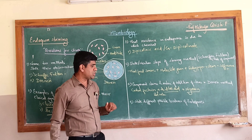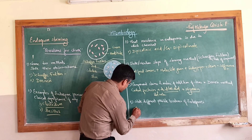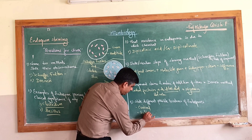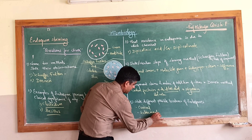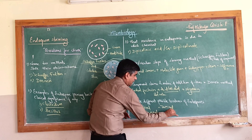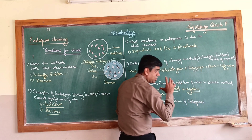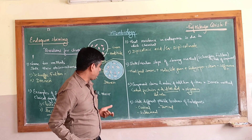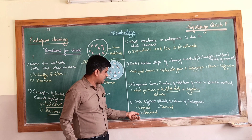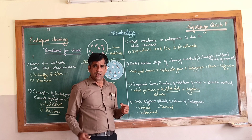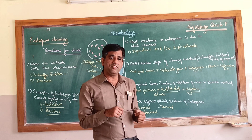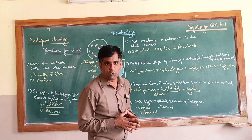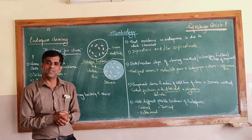Finally: state the different possible locations of a typical endospore. An endospore may be centrally located, sub-terminally located, or located at the terminus. Sometimes the sporangium containing the endospore may be swollen or flat. The location of the endospore can help identify the genera and species.